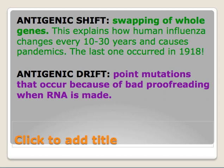Antigenic drift is different in that there are just point mutations that occur because of bad proofreading when the RNA gets made. When you're making eight different segments of RNA that all have to get packaged into capsids during assembly, it happens so quickly that sometimes mistakes are made. Those individual little mistakes create just a small variation in the glycoprotein on the surface of the virus.